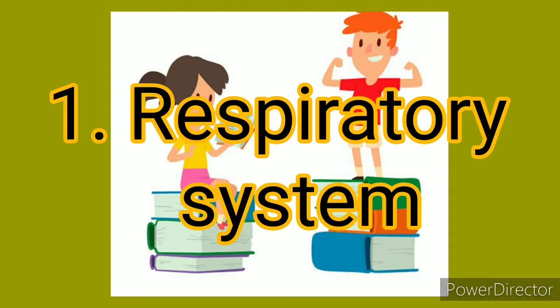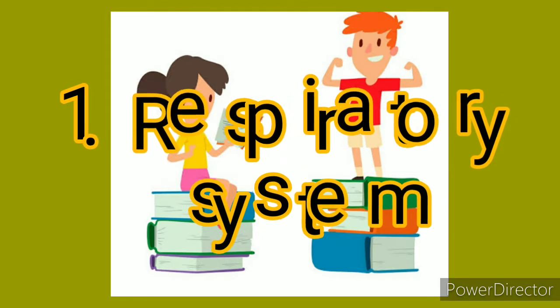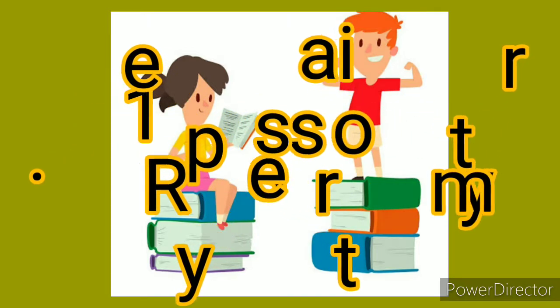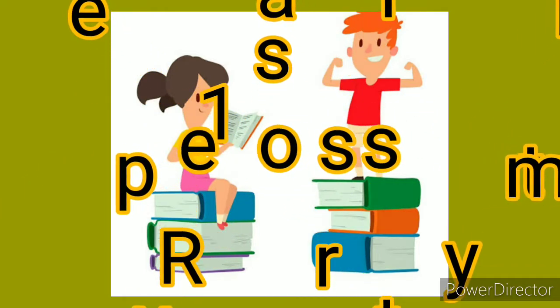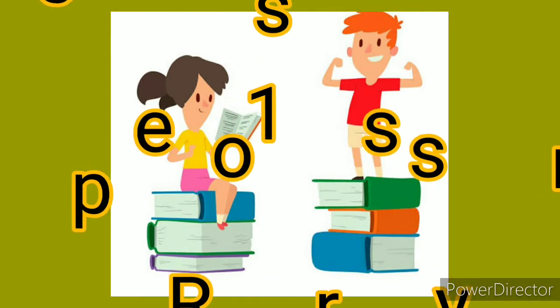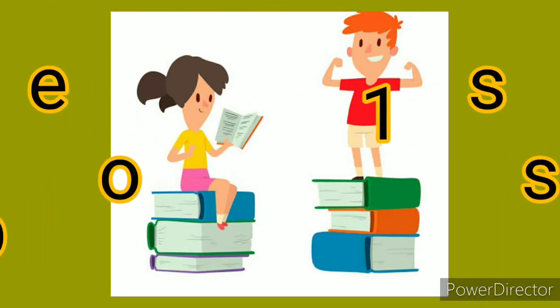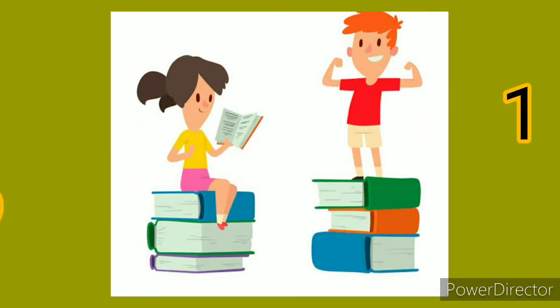The nasal chambers open into a cavity at the rear of the mouth called the pharynx. After passing the pharynx, the air passes through a windpipe or trachea. Blood helps the oxygen to reach different parts of the body.